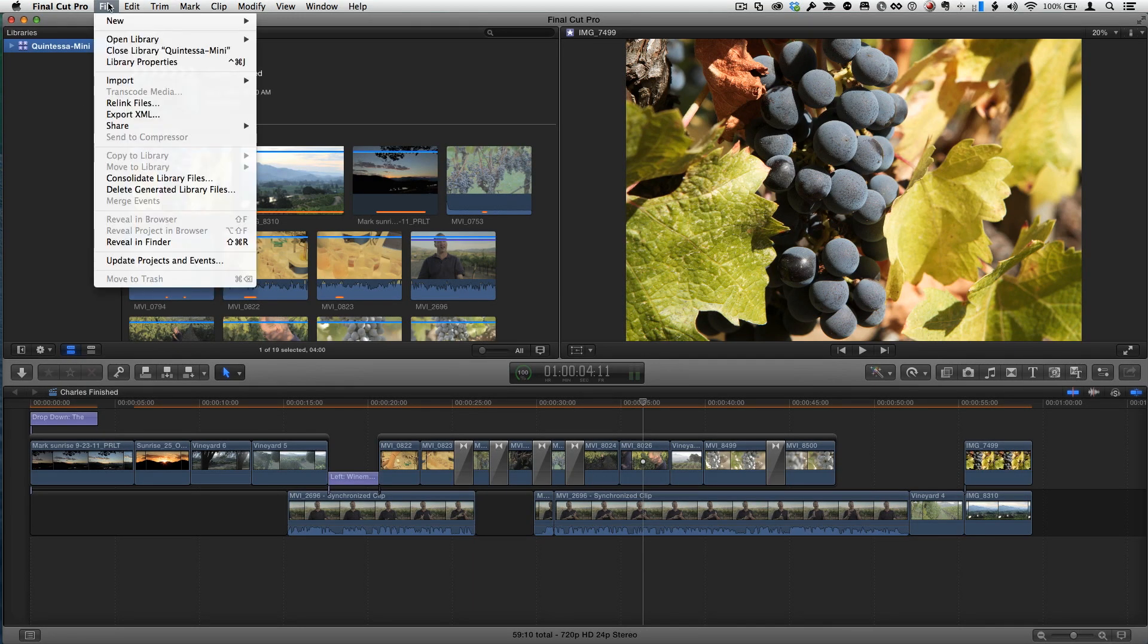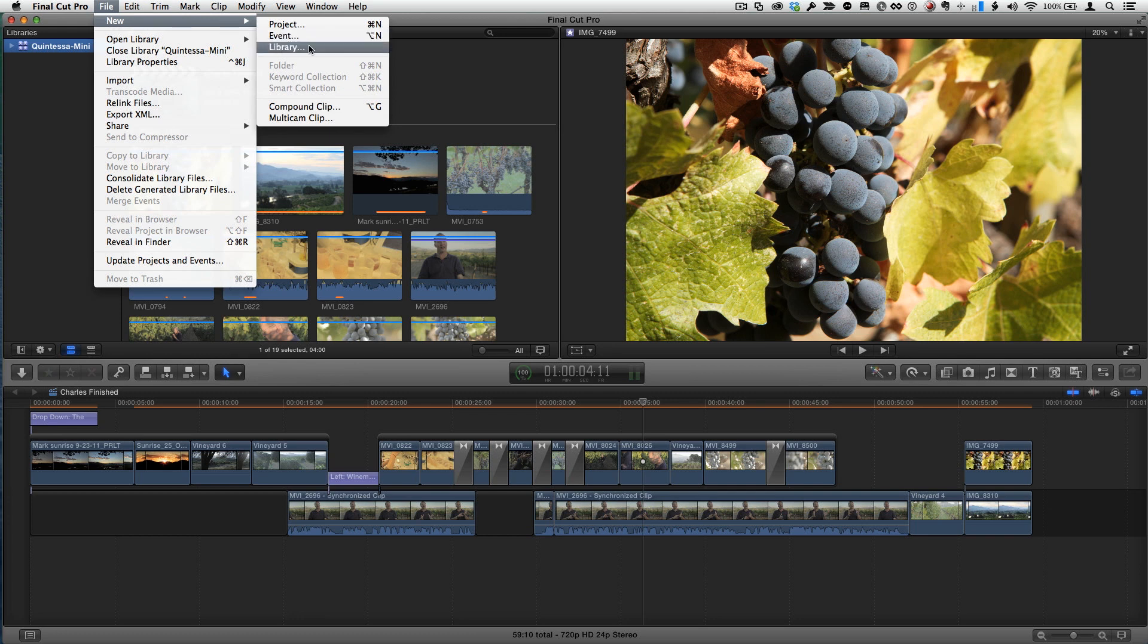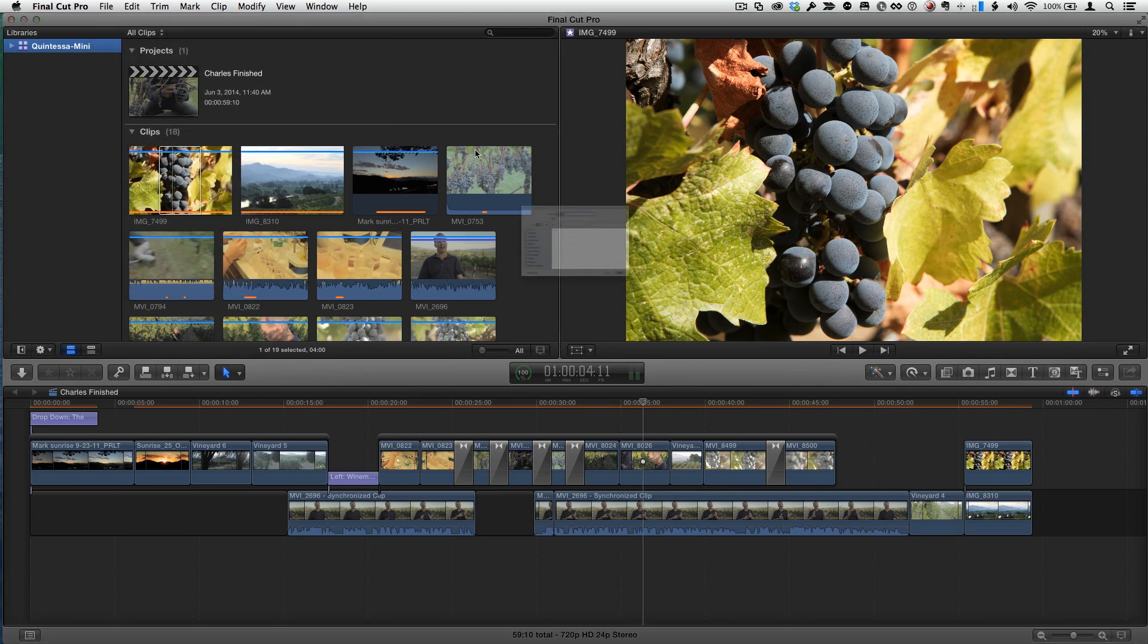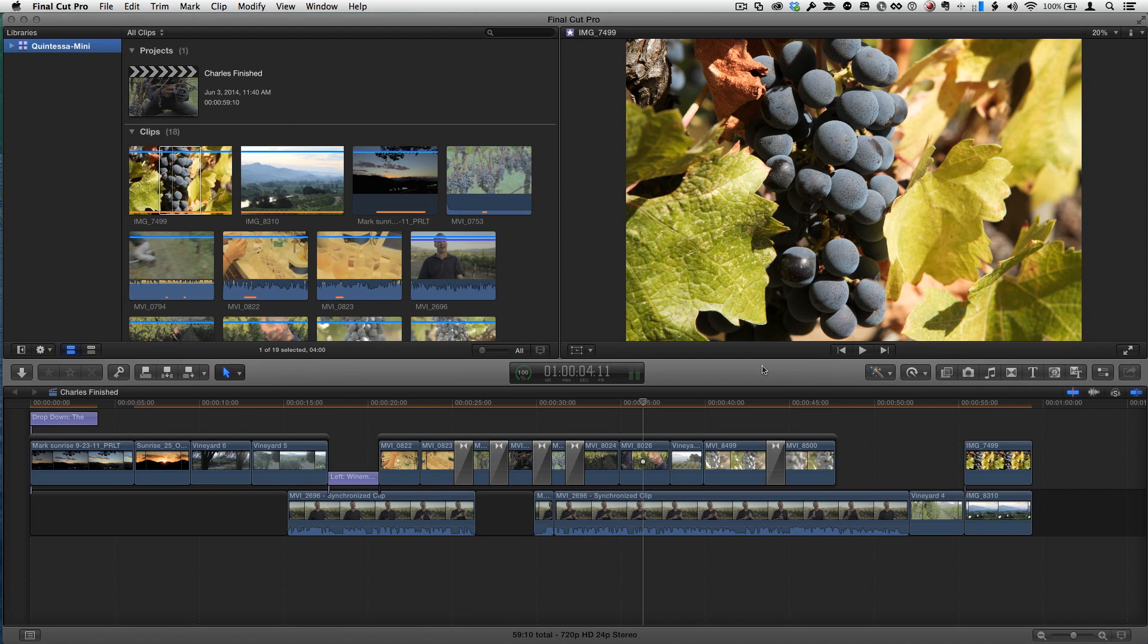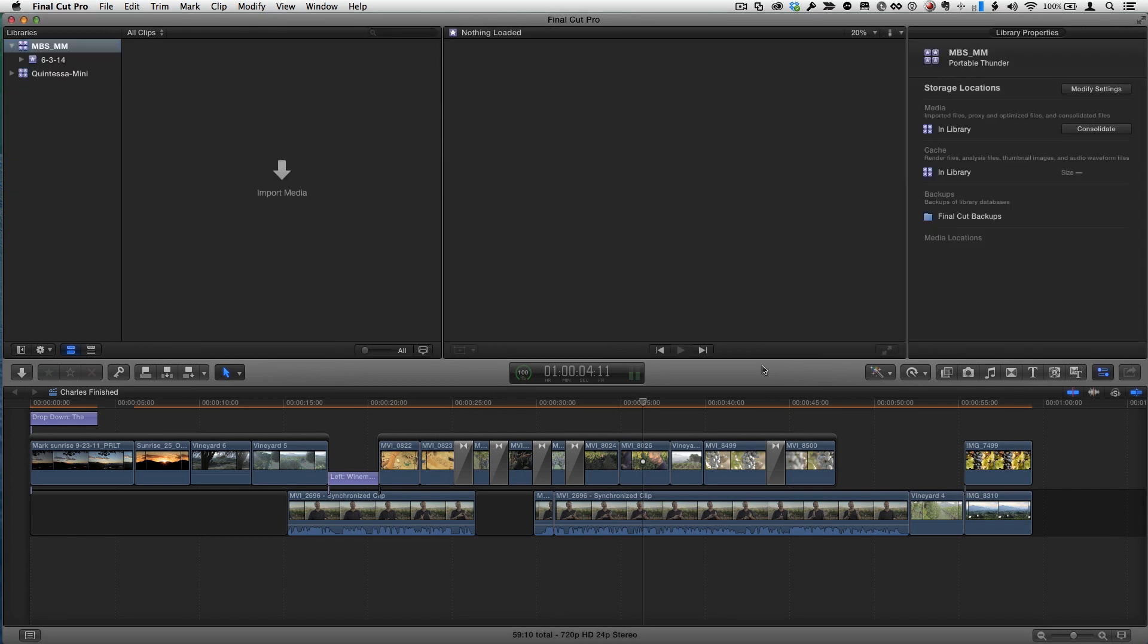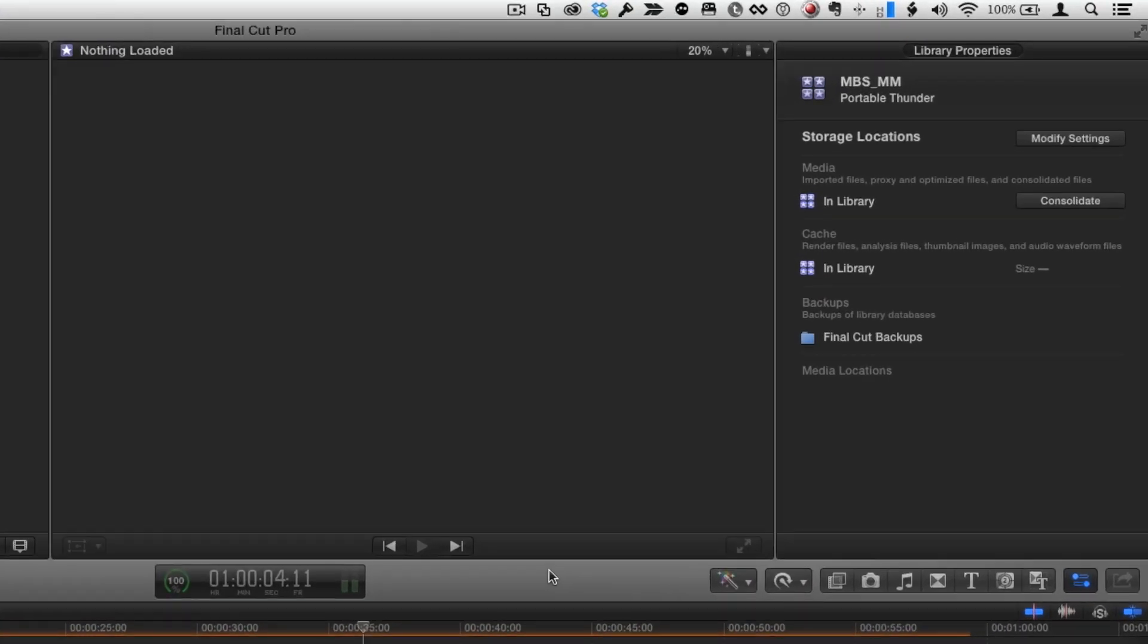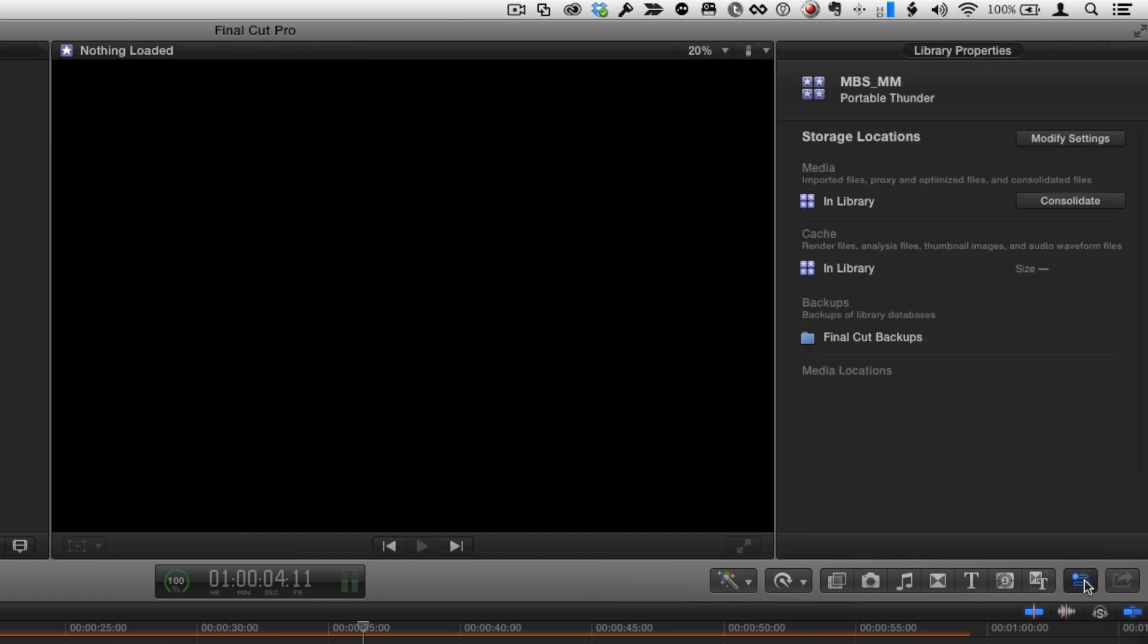I think the easiest thing is to show you. So what I'm going to do, I'm here in Final Cut, I'm going to create a new library. I have one open, but I'm just going to create a new one to see what happens. So I'm going to say new library and I'm just going to call it MBS for MacBreak Studio and then MM for media management. As soon as I save it, notice something. The inspector popped open.